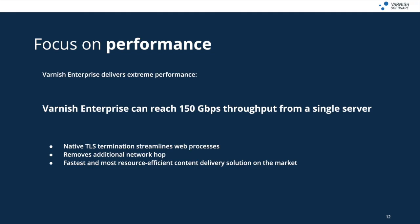Let's focus on some really important aspects of the differences between the open source project and Varnish Enterprise. Varnish Enterprise is about extreme performance, and many of the features and optimizations are dedicated to this. It's not just an increment or a small percentage — each aspect of the optimizations in Varnish Enterprise results, when taken together, in a huge performance increase. For one example, Varnish Enterprise features native, in-process TLS, meaning it can reach 150 gigabits per second throughput from a single off-the-shelf server. This is because including TLS termination in-process streamlines the web process by removing the additional network hop necessary when using an external TLS terminator.